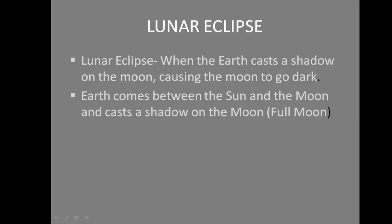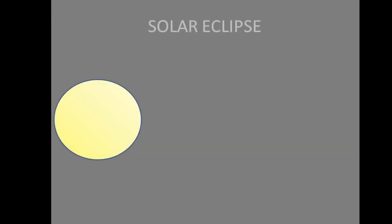So when the Earth casts a shadow on the moon, causing the moon to go dark, that is known as a lunar eclipse. This is caused on a full moon night when the Earth comes between the sun and the moon and casts a shadow on the moon.